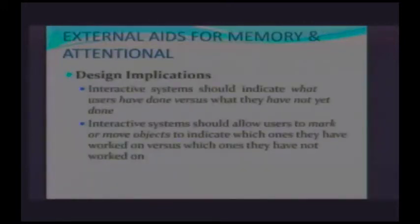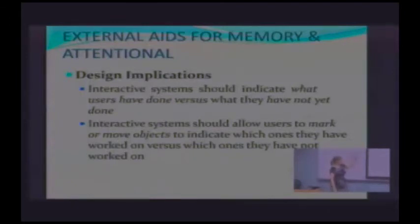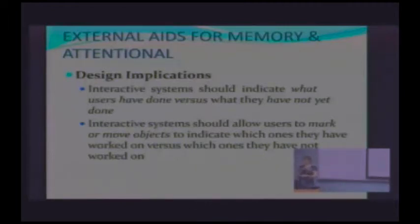What are some of the design implications of this? When we're designing things, we want to think about how we use these tools. We want to make sure that our interactive systems indicate what users have done versus what they have not done. You should make it clear where in the process a user is. It should allow users to mark and move objects to indicate which ones they've worked on versus which ones they haven't — and even which ones they've partially completed. You want that flexibility to work in the manner that we as humans tend to work.